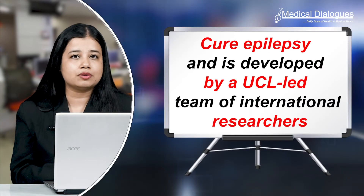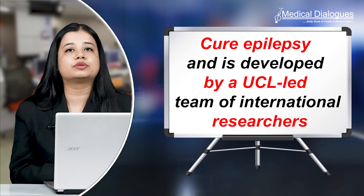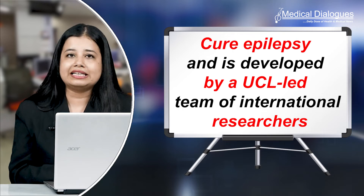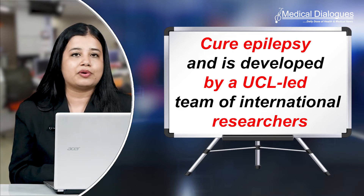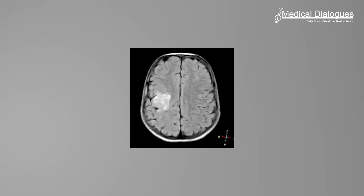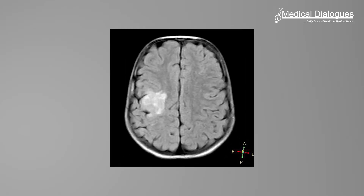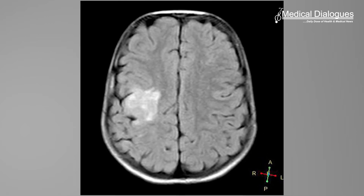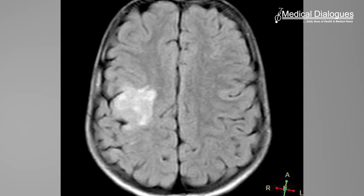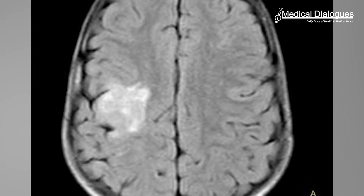Hello and welcome to Medical Dialogues, your daily dose of health and medical news. I'm Mr. Zaman and today I'm going to talk about an AI algorithm that detects brain abnormalities that could help cure epilepsy, developed by a UCL-led team of international researchers. The Multi-Center Epilepsy Lesion Detection Project, or MELD, used over 1,000 patient MRI scans from 22 global epilepsy centers to develop the algorithm, which provides reports of where abnormalities are in cases of drug-resistant focal cortical dysplasia, or FCD — a leading cause of epilepsy.